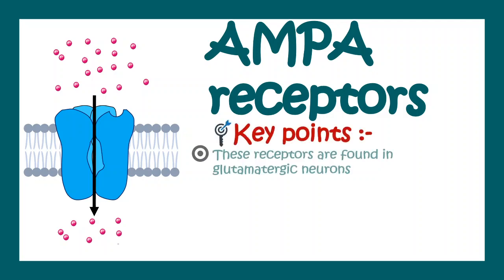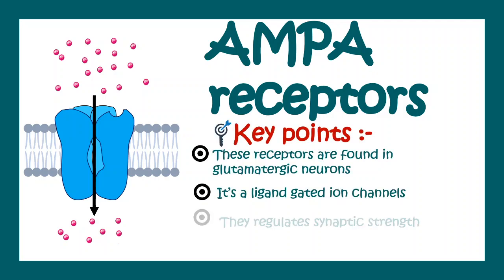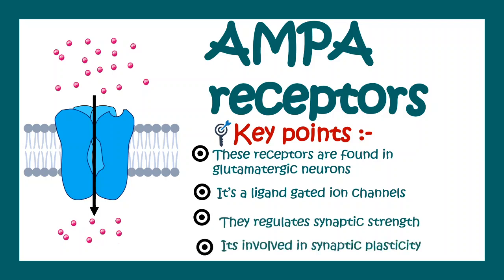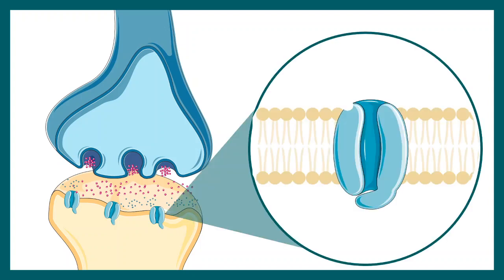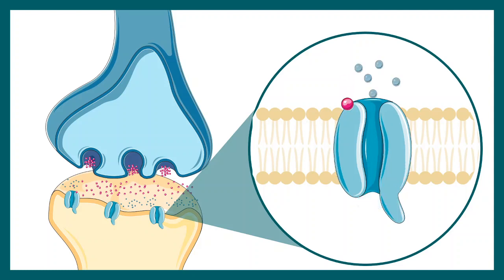AMPA receptors are glutamate receptors. They are ligand-gated ion channels that regulate synaptic strength and are important for synaptic plasticity. When a presynaptic action potential reaches the synapse, glutamate is released into the synaptic cleft. Upon glutamate binding to AMPA receptors in the post-synapse, the channel opens and conducts cations inward, leading to a positive potential and a post-synaptic response.